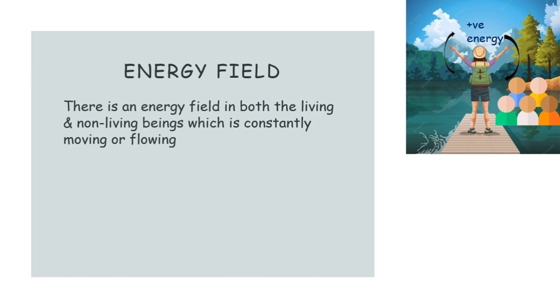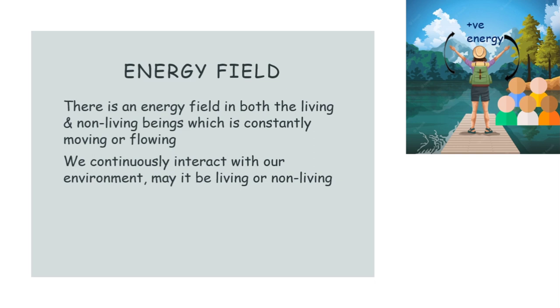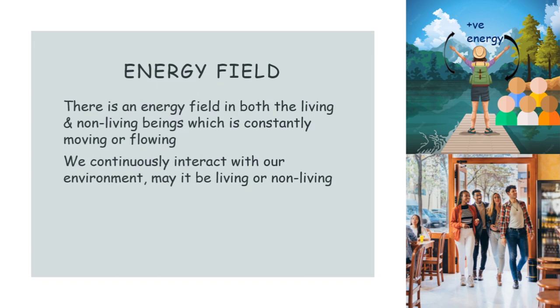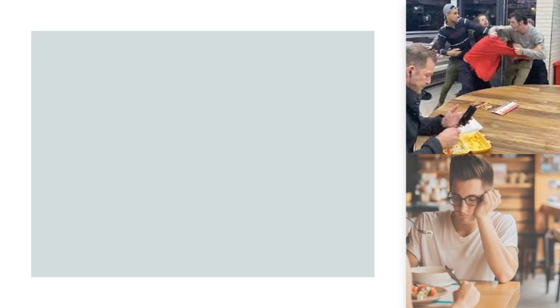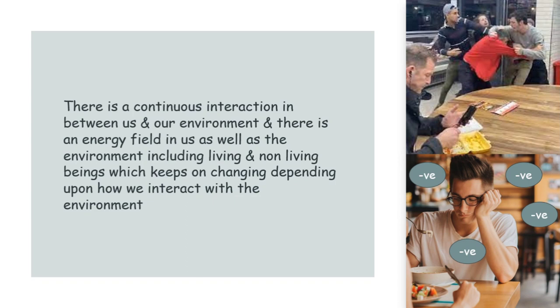Rogers said we are continuously interacting with our environment, whether living or non-living. Suppose we enter a cafe, sit on the sofa, admire the interior, like the furniture — these are interactions with the environment and there is positive energy in that, which is why it makes us feel good. But if a fight breaks out or we spot someone we dislike, the positive energy changes into negative energy and we don't feel good anymore. There is a continuous interaction between us and our environment, and the energy field keeps changing depending on how we interact.